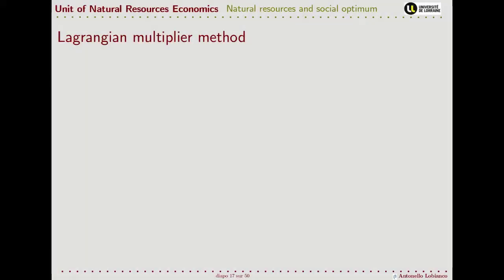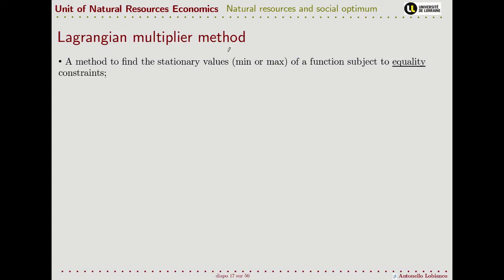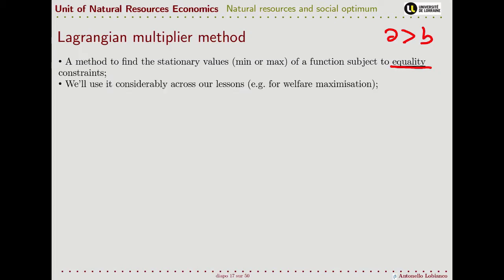We are often in the situation where we want to optimize a function subject to some constraints. In such case we can use the Lagrangian multiplier method. This is a method to find the stationary values — either minimum or maximum — of a function subject to equality constraints. I stress equality because if the constraints are a different type, the problem becomes a little bit harder and we need to use other tools. In case of equality constraints we can use this method, and we'll use it considerably across our lessons because many problems we will see are actually problems of constrained optimization — for example, welfare maximization, as we just saw in the previous slide.